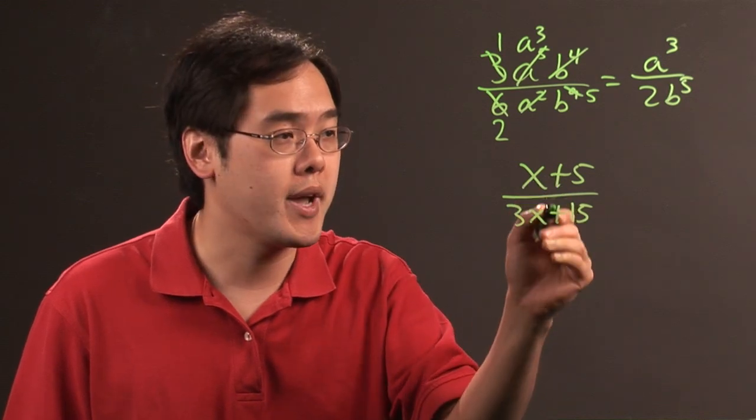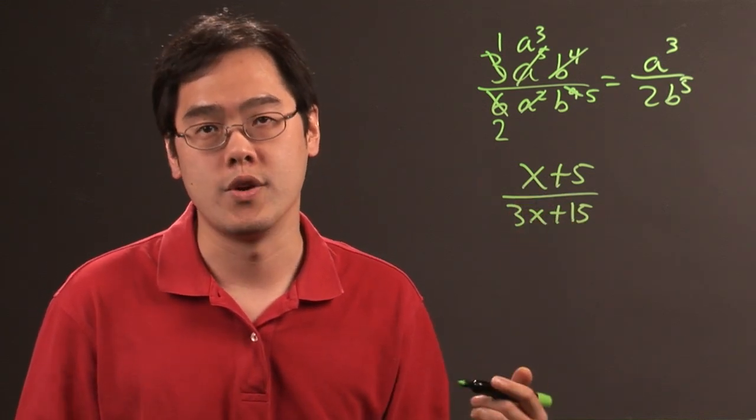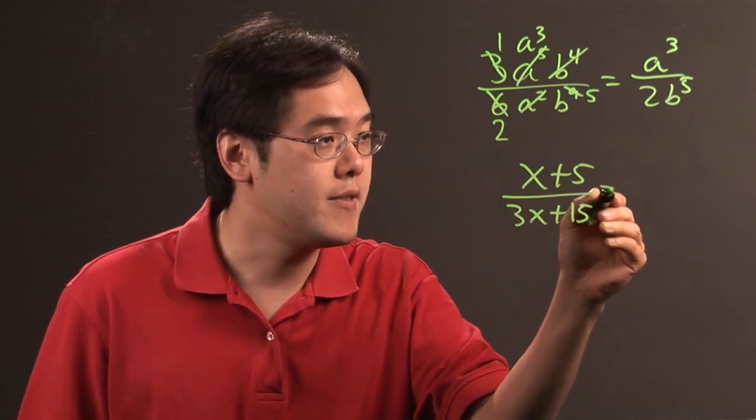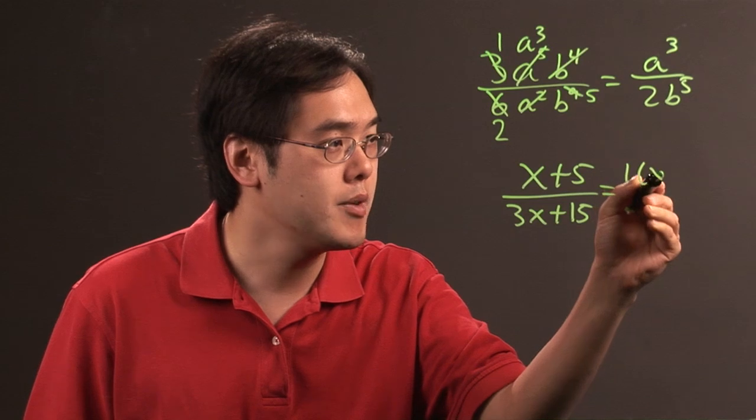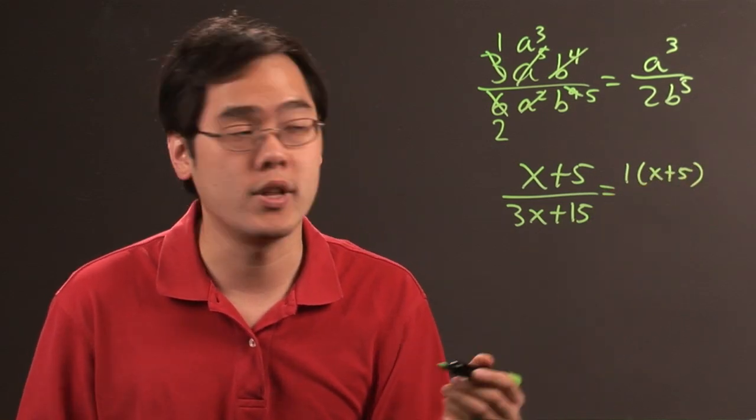Now because the terms are separated by addition, you really can't do that. They have to be separated by multiplication or division for you to be able to reduce. So now this x plus 5, there's really nothing that can be reduced here. So they both have a 1 in common. It seems kind of redundant, but you'll understand why very shortly.